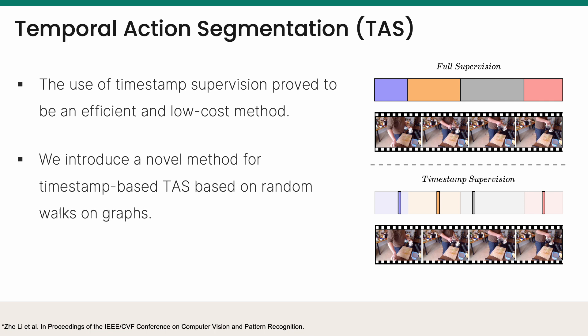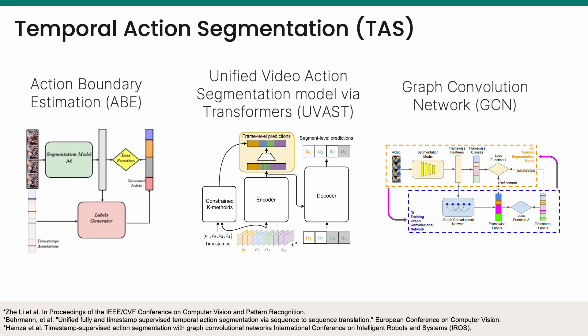In this work, we reformulate the task of Temporal Action Segmentation as a graph segmentation problem with weakly labeled timestamps. Previous methods have been proposed for timestamp-based Temporal Action Segmentation. Our method is the first to model the video as a graph and produce dense labels via random walks.